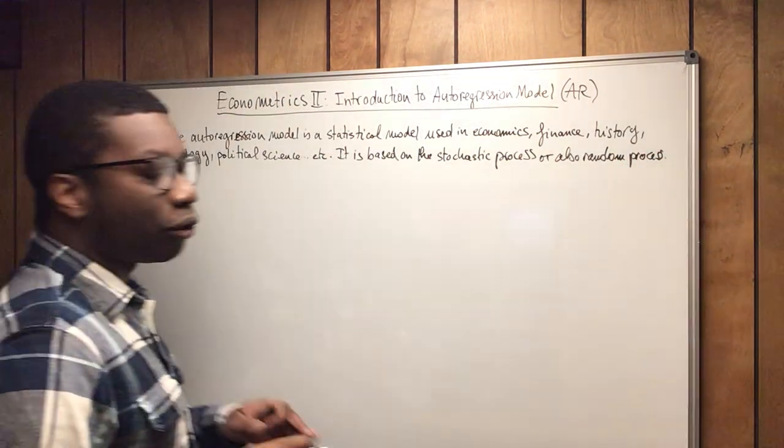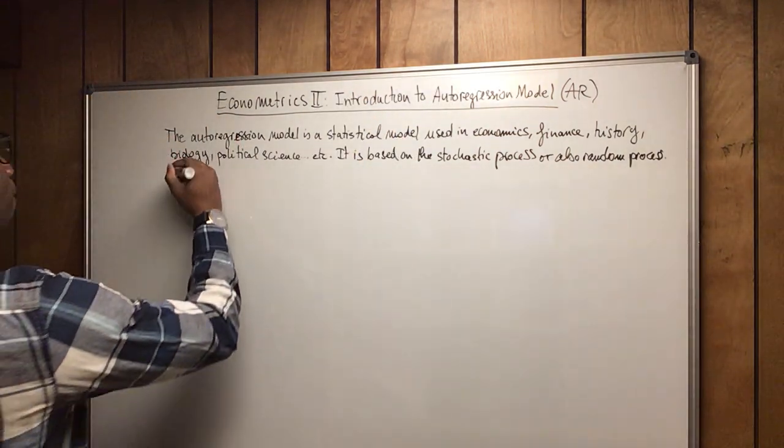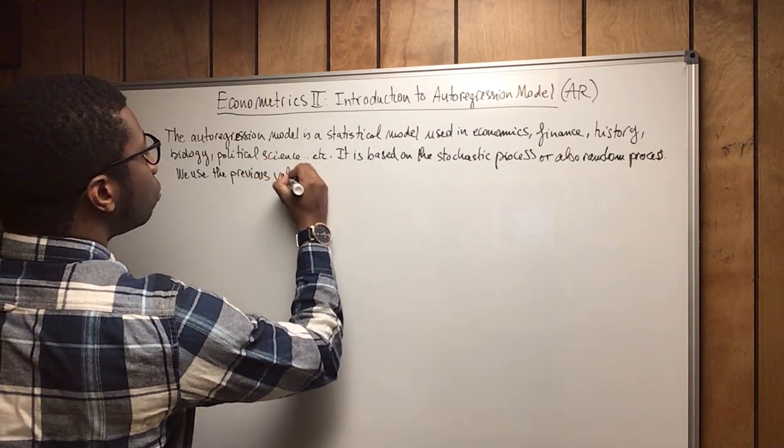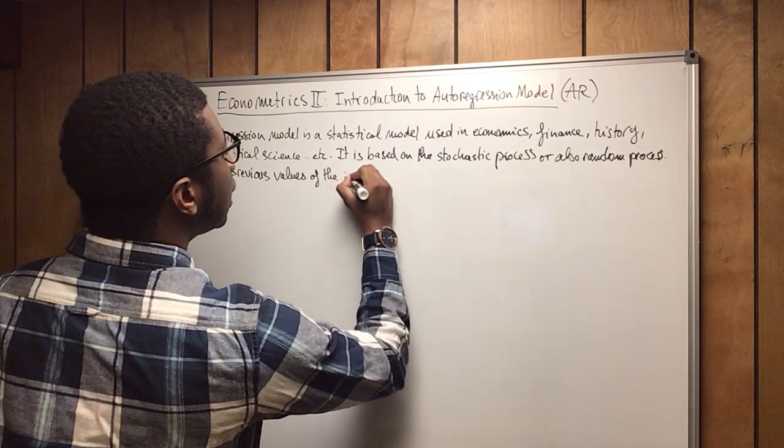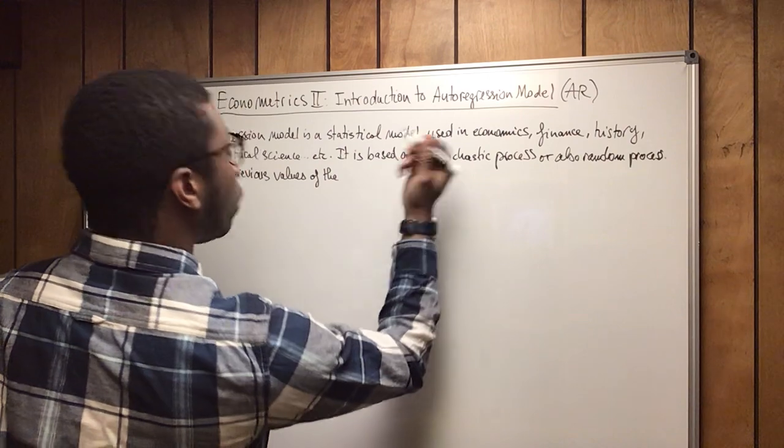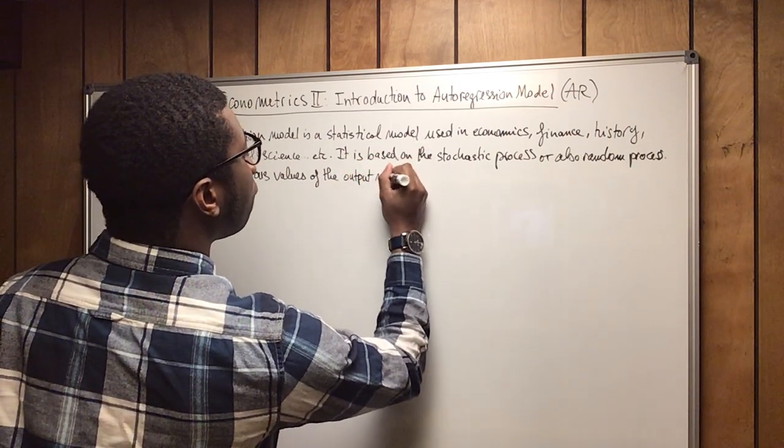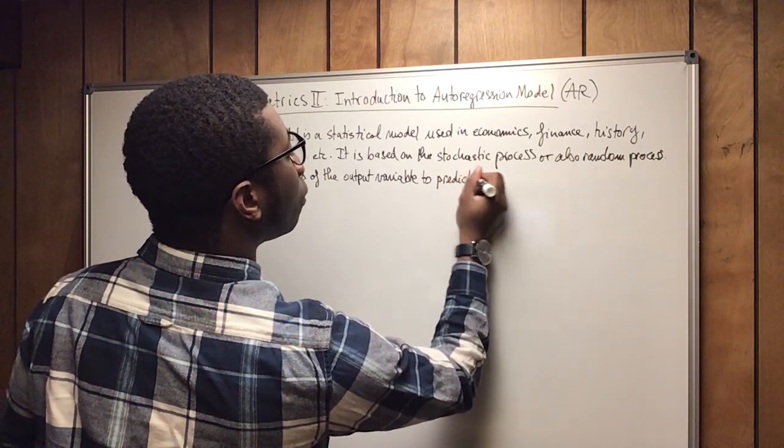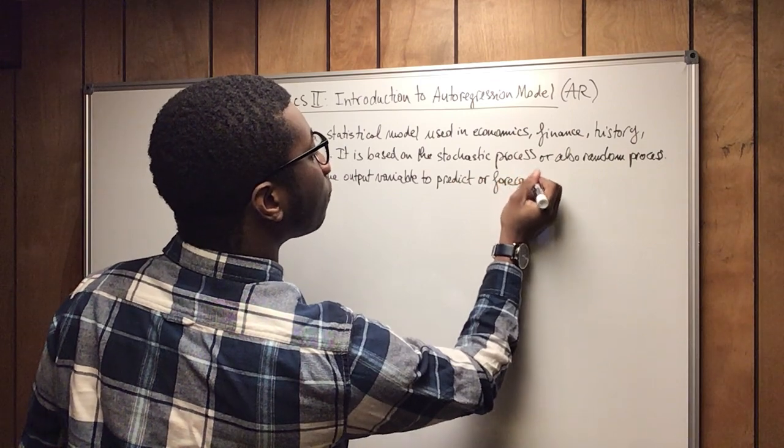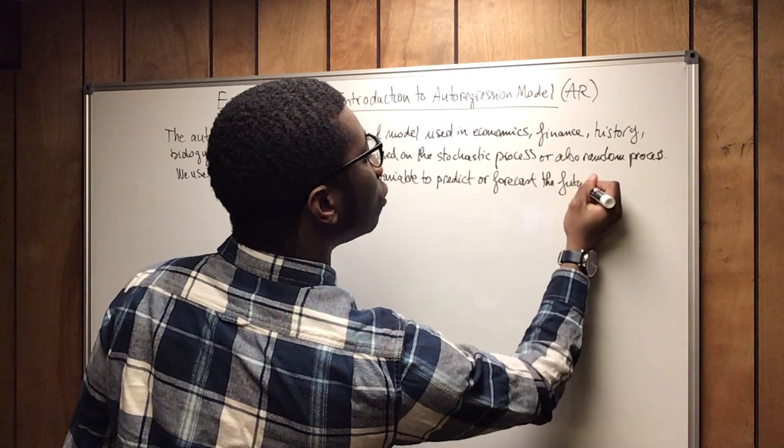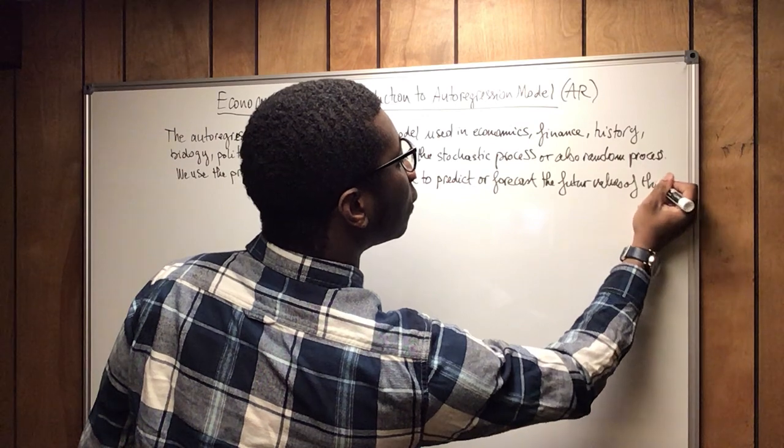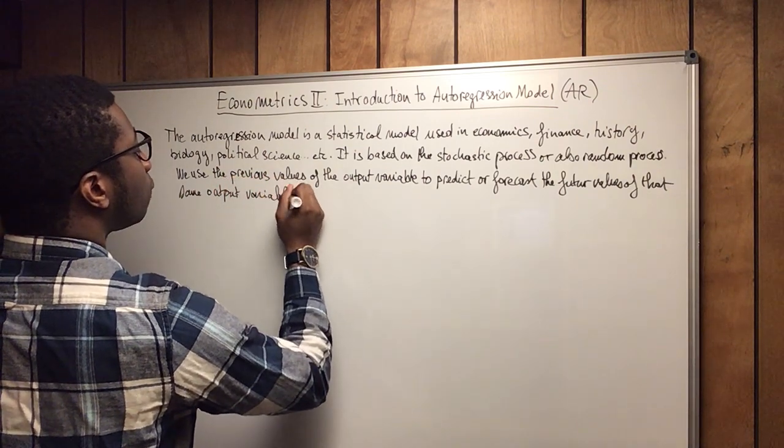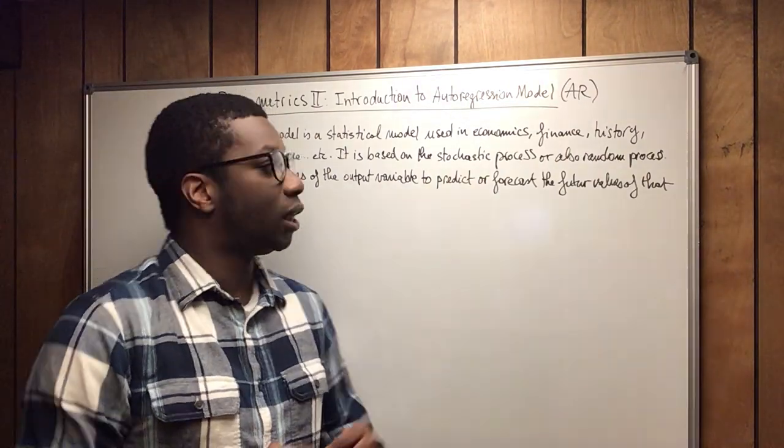And the particularity of the autoregression model is that we use the previous values of the dependent variable or output variable to predict or forecast the future values of the dependent variable or output variable. So that's the main concept of the autoregression model.